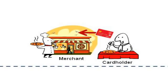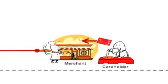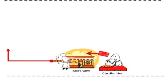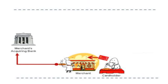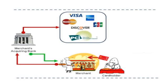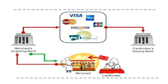A customer pays the merchant with a credit card. The merchant submits the cardholder information to the Acquiring Bank. The Acquiring Bank pays the merchant and submits information to the payment card company. The payment card company submits the information to the Issuing Bank, which then bills the cardholder.